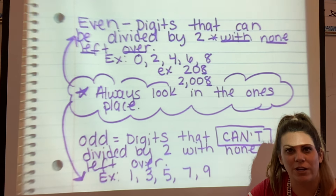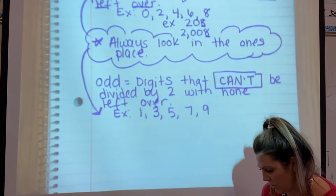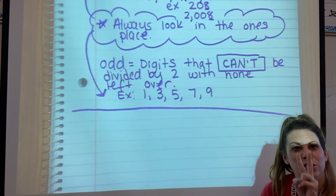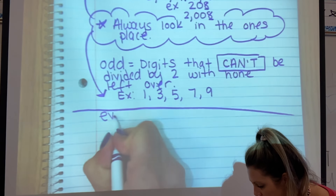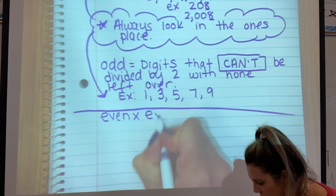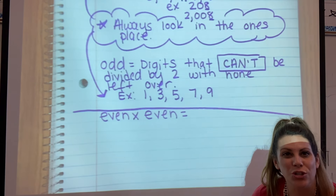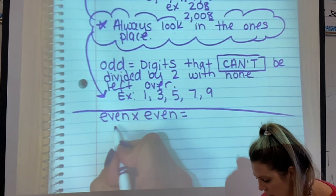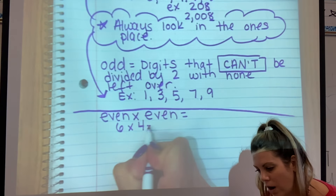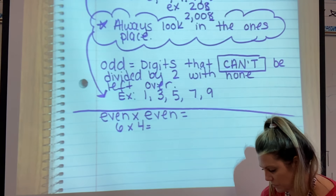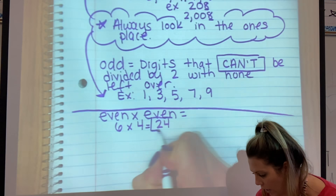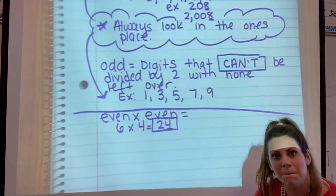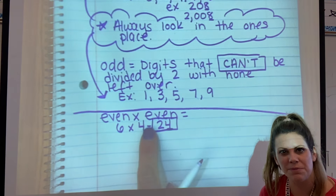So that was just a refresher — we should know even and odd numbers, that should have been pretty easy. But now we're going to look at some patterns. What if we take two even numbers — an even number times an even number? What's the answer going to be, even or odd? Let's pick two even numbers. What if we did six times four? Six times four equals 24. Always look in the one's place — is four even? So the pattern right now is even times even equals even.